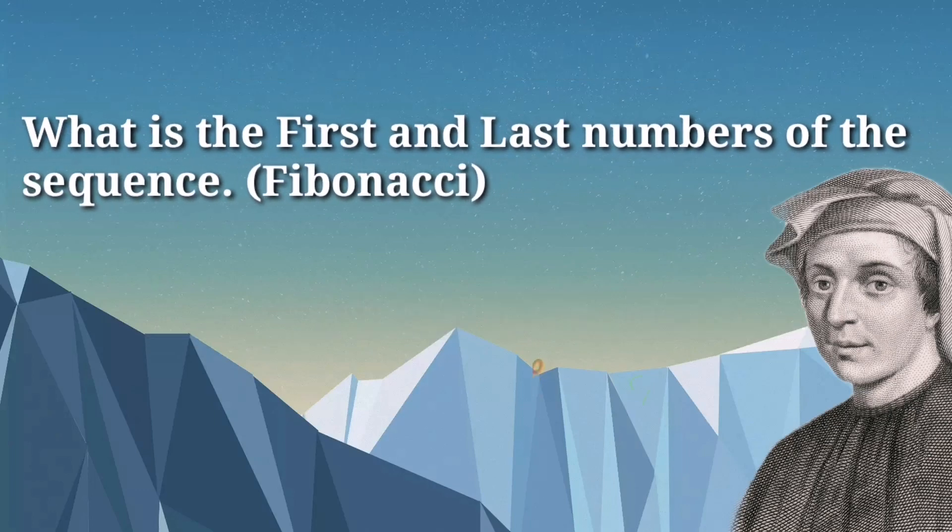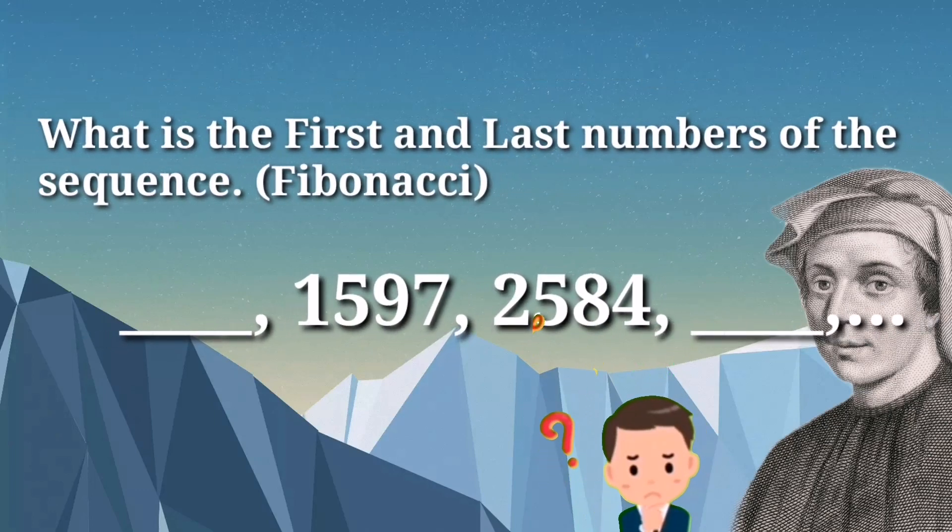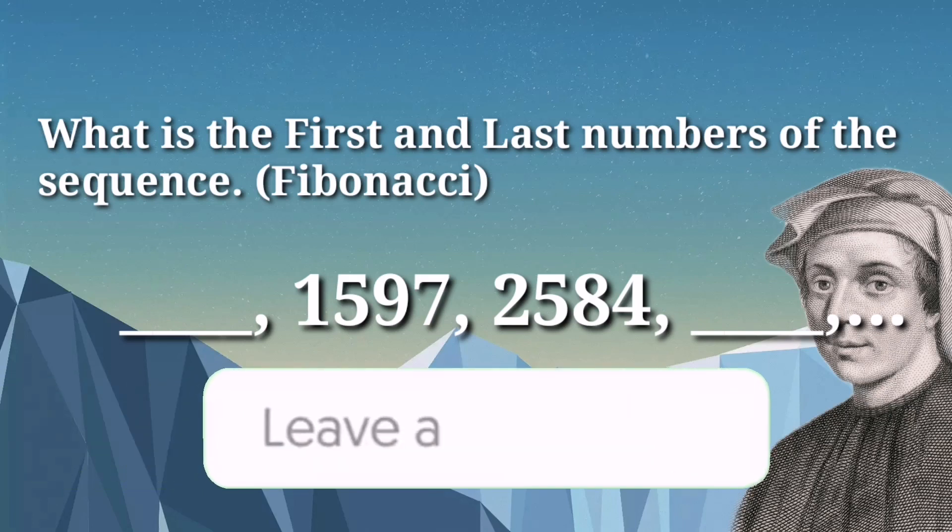Now we have What is the first and last numbers of the sequence in Fibonacci? Blank, 1,597, 2,584, and blank. Now, comment your answer.